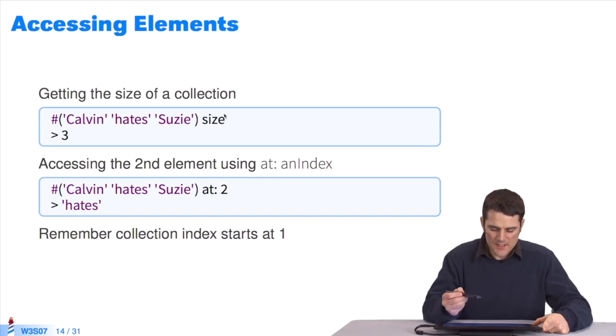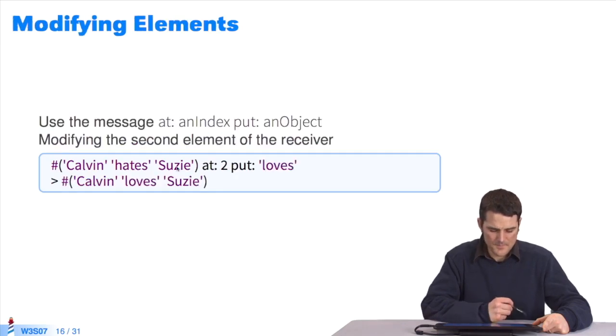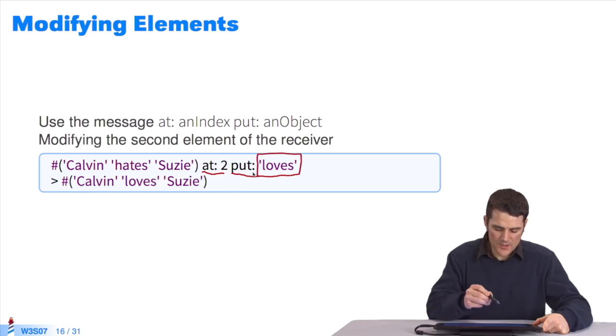You can send SIZE to a collection to learn about its size. You can access a collection's element by using the method AT:. I already mentioned it. Be careful. When you access an element by providing an index, you must ensure that the index is within the collection's bounds. It should be smaller than its size. If I ask this collection to return the element at index 55, it won't exist. It'll return an error. To modify the elements, at index 2, I want to insert a new element in the collection. The string LOVES will replace the string HATES. You can see it in the result.